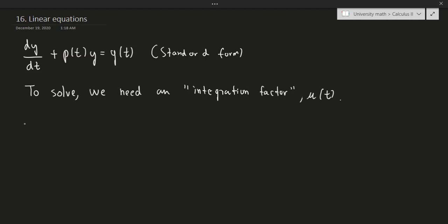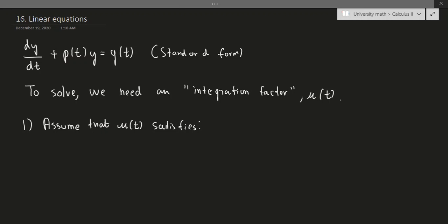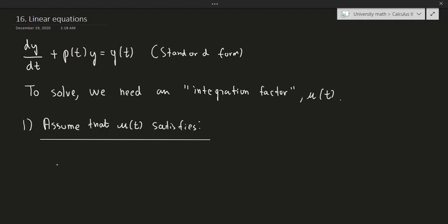Now let's talk about how to actually solve this equation. The first step: I'm going to assume that mu satisfies the following — that mu times p is equal to mu prime. This might seem a bit absurd at first, but let's just roll with it. In mathematics, you're always allowed to assume something, as long as at the very end you can justify your assumption with some other proof technique. If you can justify your initial assumption, you can use it for the rest of the proof.